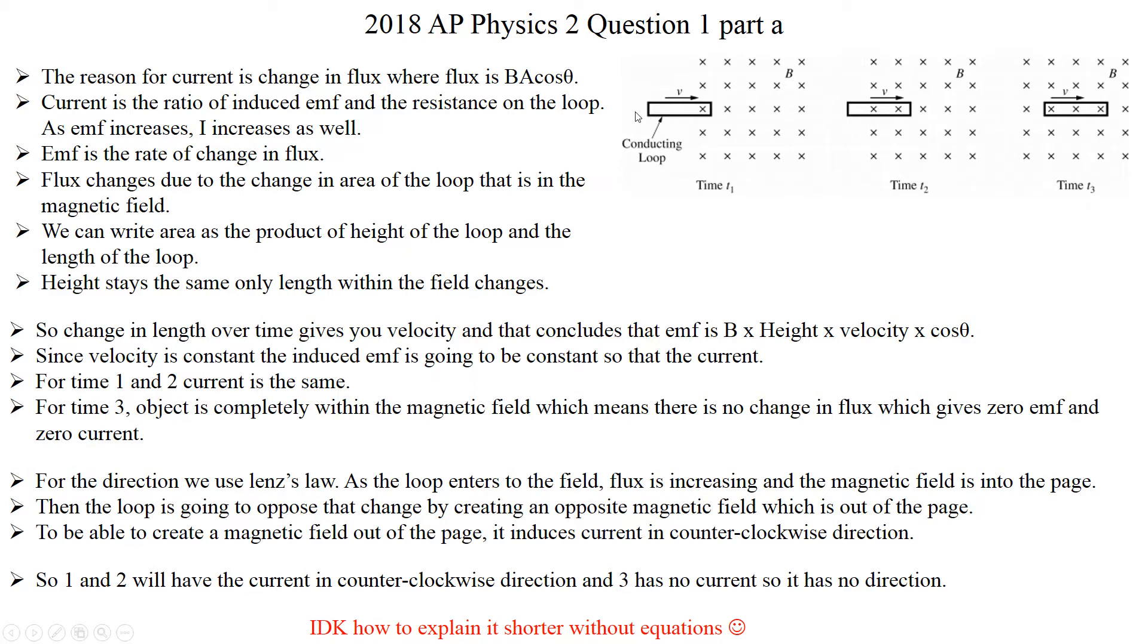But that length is going to have more and more length within the magnetic field. So if you think about flux that way, length stays the same, but this time actually delta x. This x is changing. So if you consider flux as b times area, magnetic field times area, b is constant, area we define as length times distance. So length, this height, is also staying constant, only x is changing.